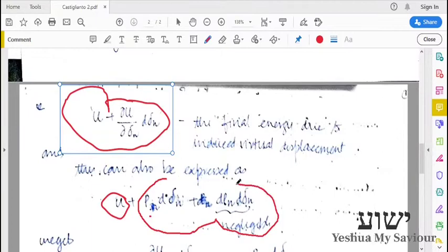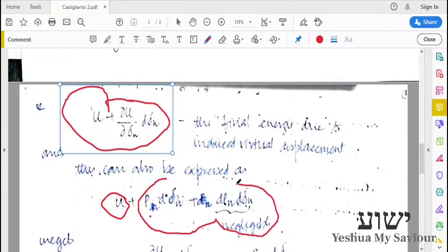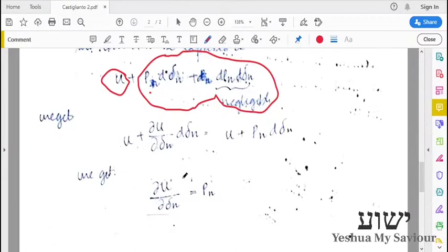As we have two very small quantities, we can neglect it when compared to these two quantities. So we neglect them, we equate them, and after equating we get something like this: dU by d delta n equal to Pn.